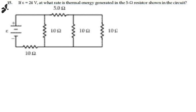Here's problem 2815. If the EMF of the battery is 24 volts, at what rate is thermal energy generated in the 5 ohm resistor shown in the circuit?